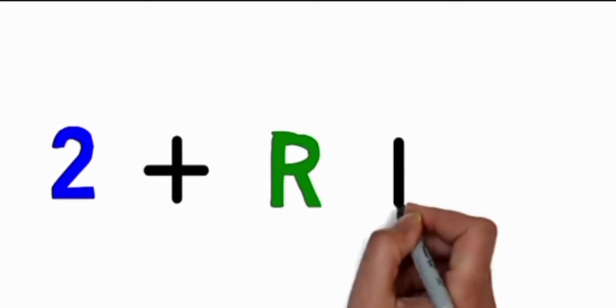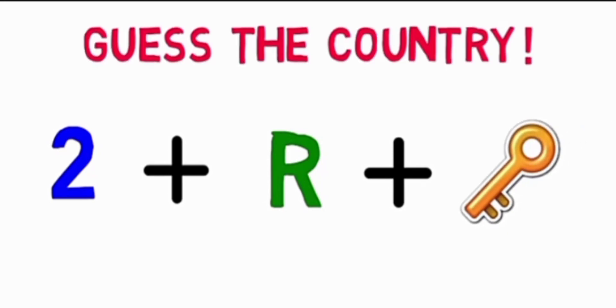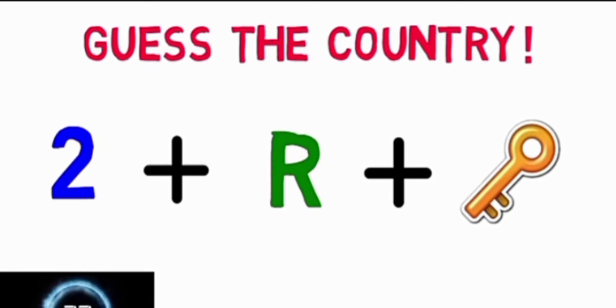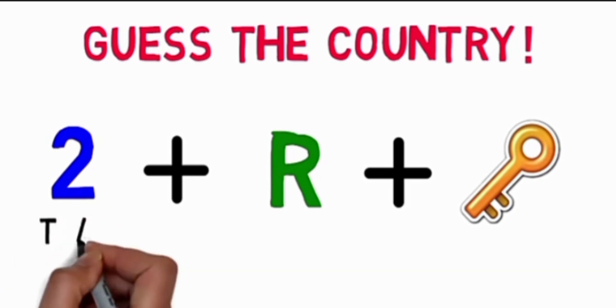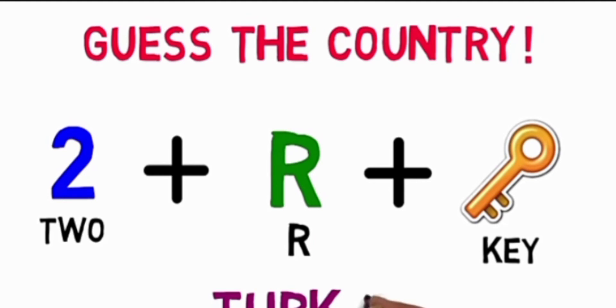The next one is two plus R plus key. This one is also very famous. This country is getting very famous in Pakistan these days, so that's so easy for you all to guess this country. The countdown has begun and has ended. Two plus R plus key—what is this? Turkey. You all know that Turkey has been very famous in our country in the past year.